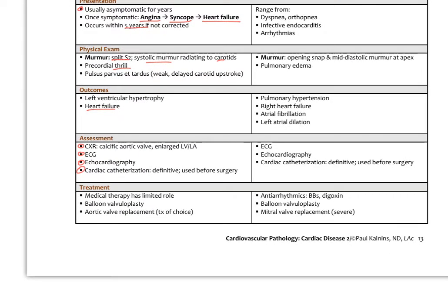The outcomes would be left ventricular hypertrophy and eventually heart failure. Workup includes chest x-ray showing a calcific aortic valve and enlarged left ventricle, ECG, echocardiogram, and cardiac catheterization as the definitive test before any surgery. Medical treatment with beta blockers, calcium channel blockers, and blood pressure reduction has limited role. Main treatments are balloon valvoplasty or aortic valve replacement, which is the treatment of choice.